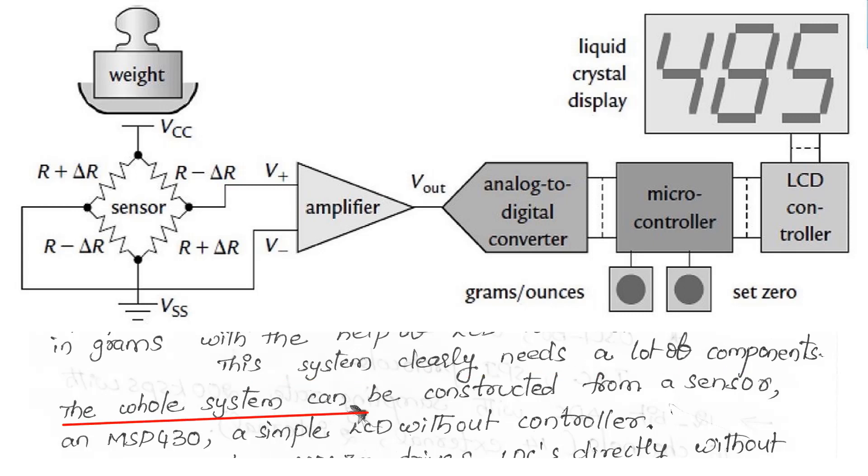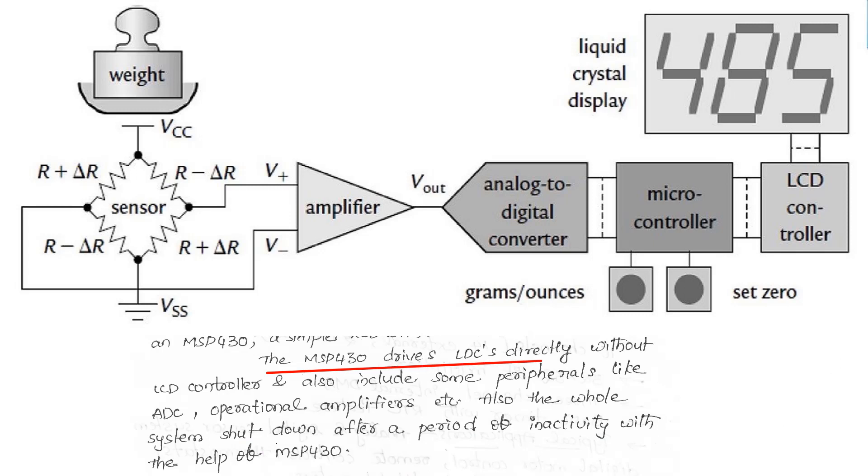The whole system can be constructed from a sensor, an MSP430, and a single LCD without controller. The MSP430 drives the LCD directly without an LCD controller and also includes some peripherals like ADC, operational amplifier, etc. The whole system can shut down after a period of inactivity with the help of the MSP430.